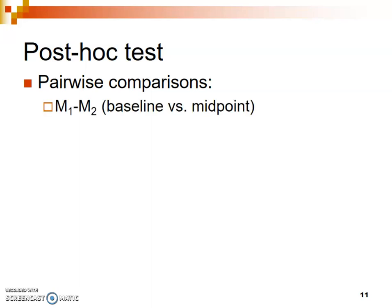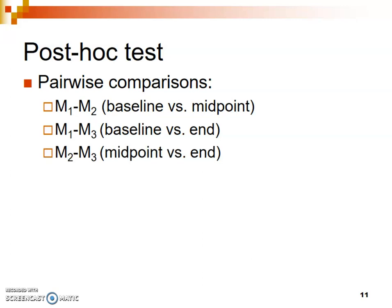The first pairwise comparison is comparing the mean for the baseline — the average GRE score at baseline — to the midpoint. Another pairwise comparison is comparing the baseline measurement to the final endpoint measurement. And the last pairwise comparison is comparing the midpoint measurement to the end. As long as you've compared each of your means to each other, the order doesn't matter.